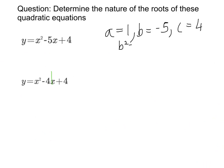So I'm going to work out b squared minus 4ac. So that will be minus 5 squared minus 4, a is 1, and c is 4. So that will be 25 minus 16, which is equal to 9. Therefore, 9 is greater than 0.